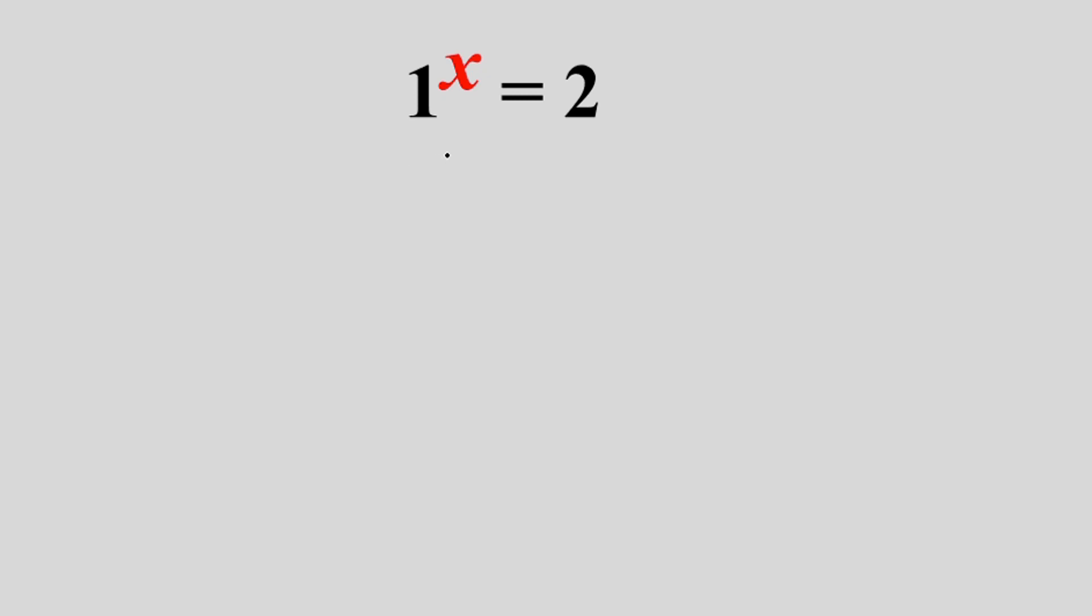First of all, let's see whether it is real. Let's go ahead and rewrite the equation in different form. I'm gonna write it as e to the power ln of 1 to the power x and this is equal to e to the power ln of 2. From the properties of logarithm, the power now becomes the leading number. So we're gonna have e to the power x ln of 1 is equal to e to the power ln of 2.